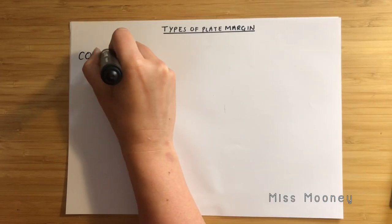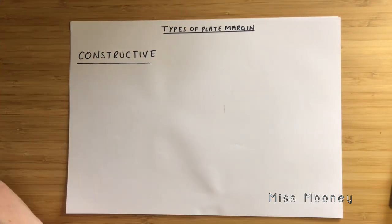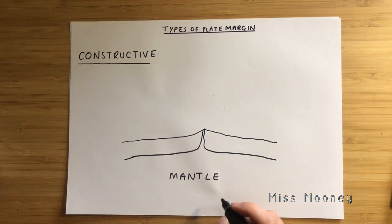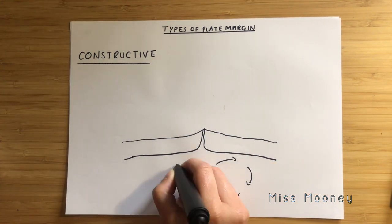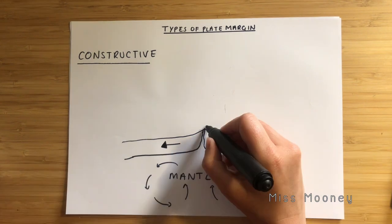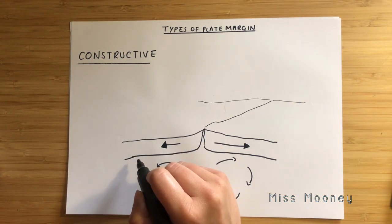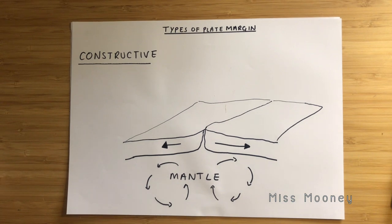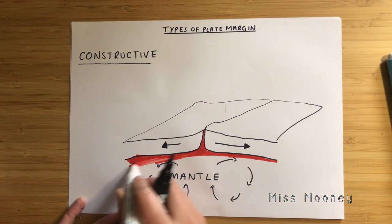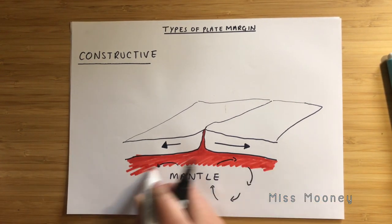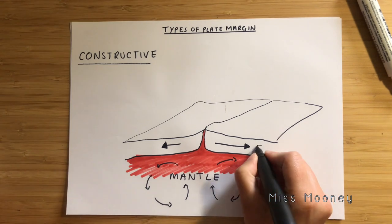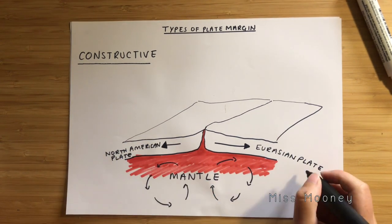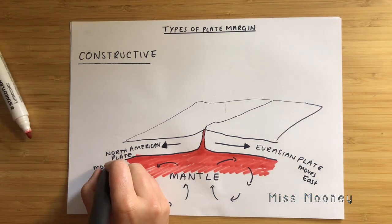The first plate margin we are going to focus on is a constructive plate margin. At this type of plate margin, two plates are moving apart or diverging from each other in opposite directions. Convection currents moving in opposite directions in the mantle move these two plates apart. This diagram shows the Eurasian plate and the North American plate moving apart from each other.